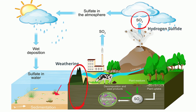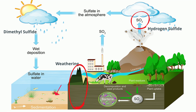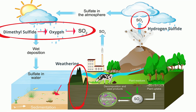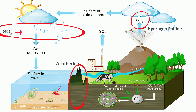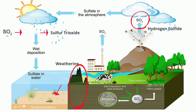Marine algae produce dimethyl sulfide that enters the atmosphere as tiny droplets. Sulfur dioxide gas also forms when dimethyl sulfide reacts with oxygen gas. The burning of fossil fuels also releases sulfur dioxide into the atmosphere. Sulfur dioxide reacts with oxygen in the atmosphere and creates sulfur trioxide. The sulfur trioxide reacts with water in the atmosphere to produce sulfuric acid.